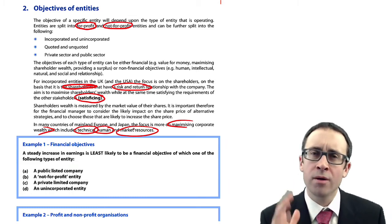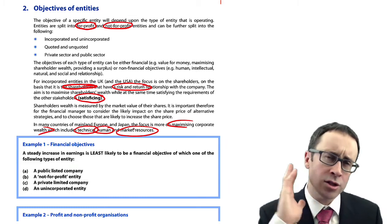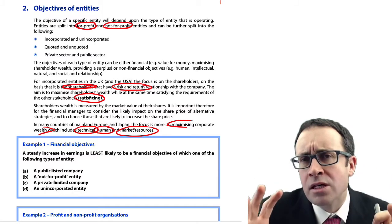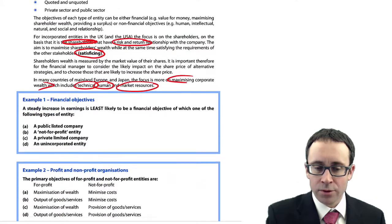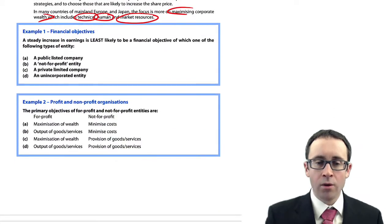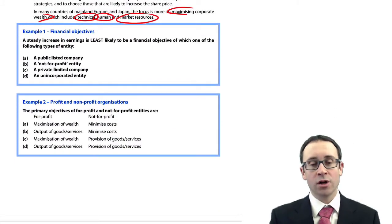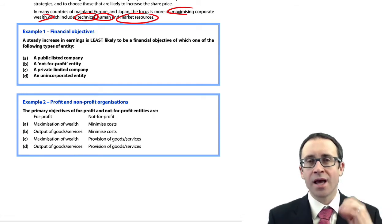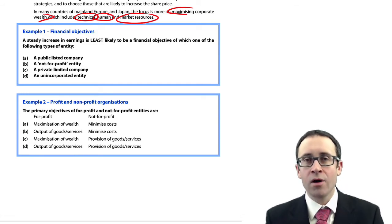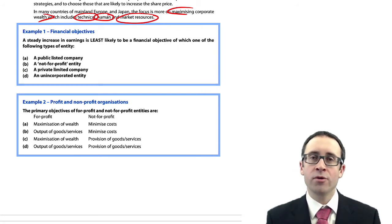What I'd like you to do is stop the video and think about the next two examples. Example number one is all about your financial objectives, and example number two is all about profit and non-profit organisations. Stop the video, have a go. When you've answered them, come back and I'll talk my way through them with you.